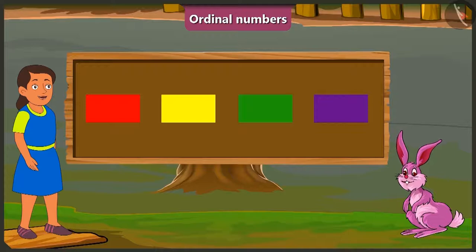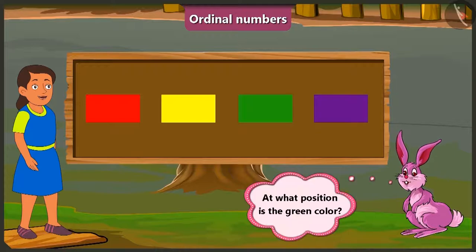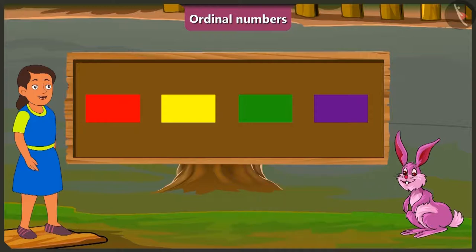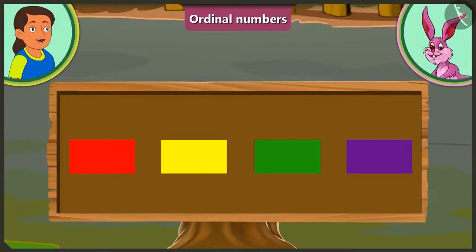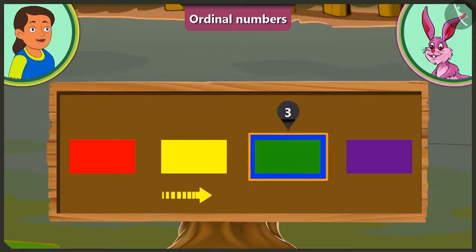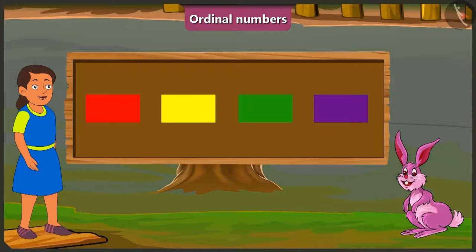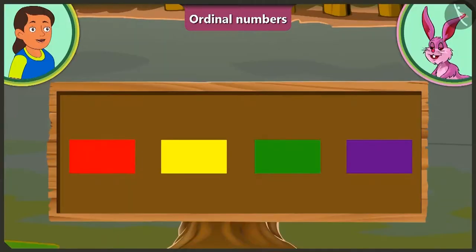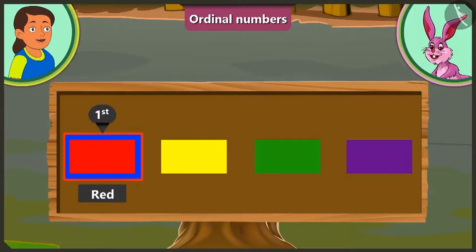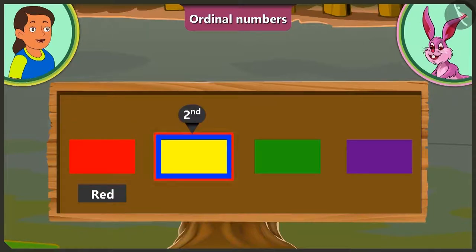Some colors are given here. Can you tell at what position is green? This is very easy — one, two, three. Green is at position number three. Look Bubbly, we don't have to just count the colors; we have to tell the position of the colors.